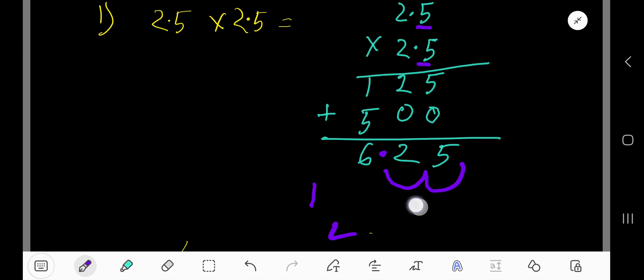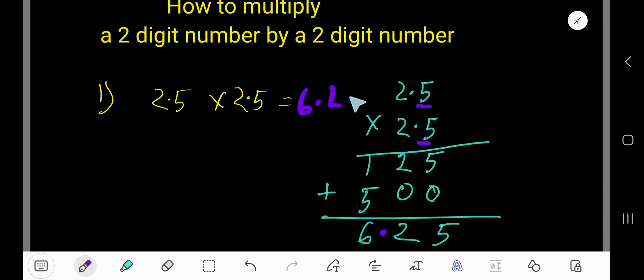So 6.25 is the answer. 2.5 times 2.5 equals 6.25.